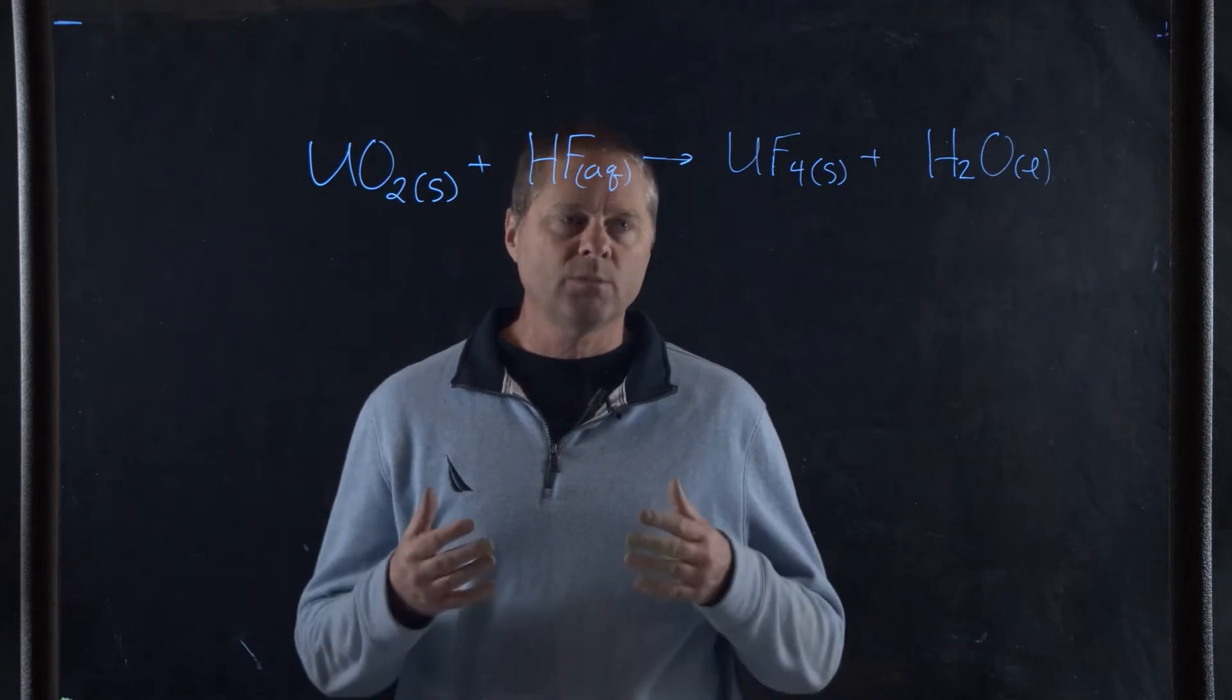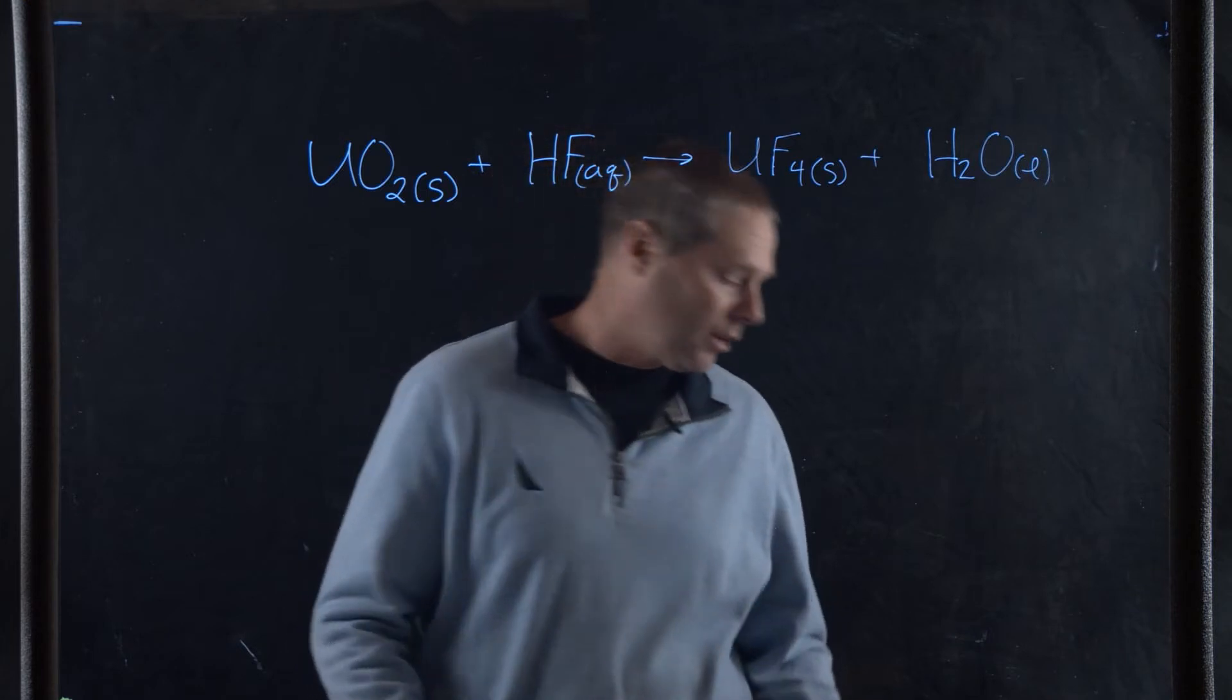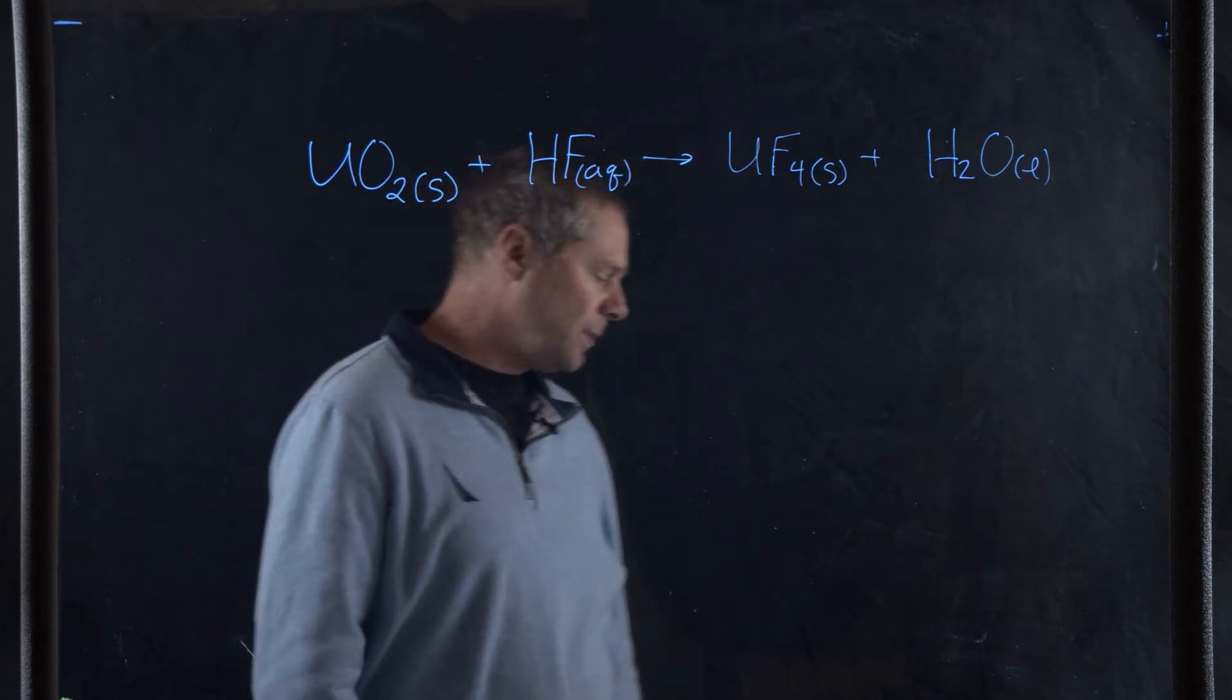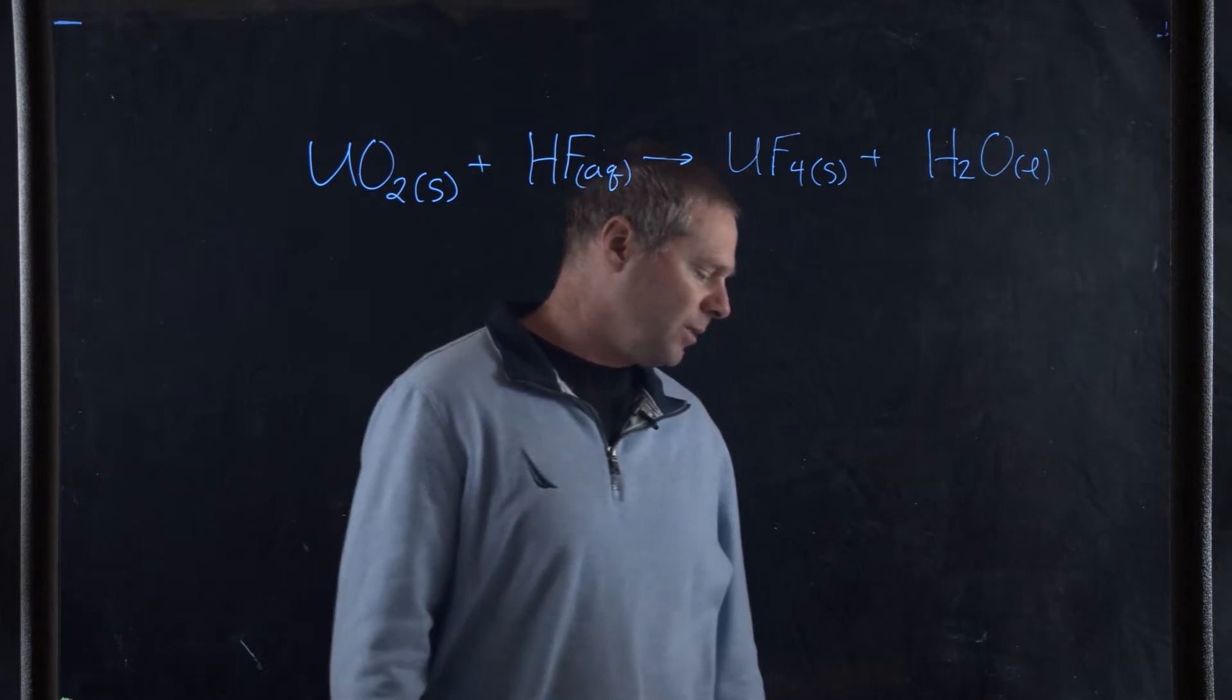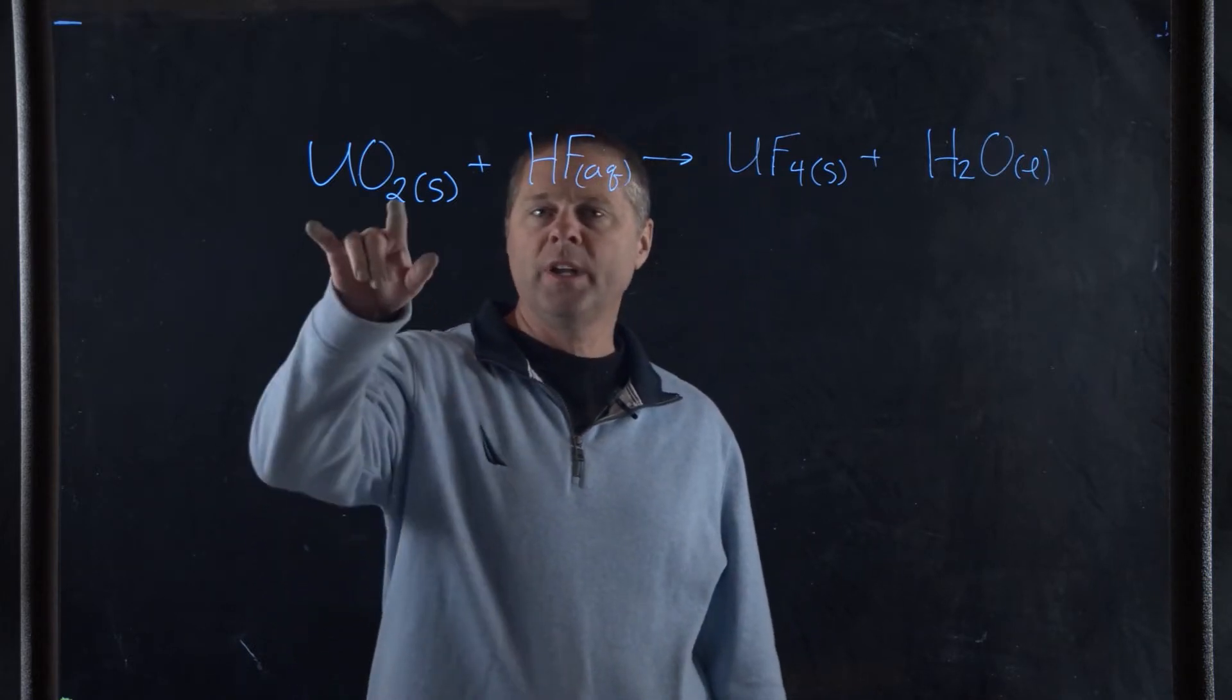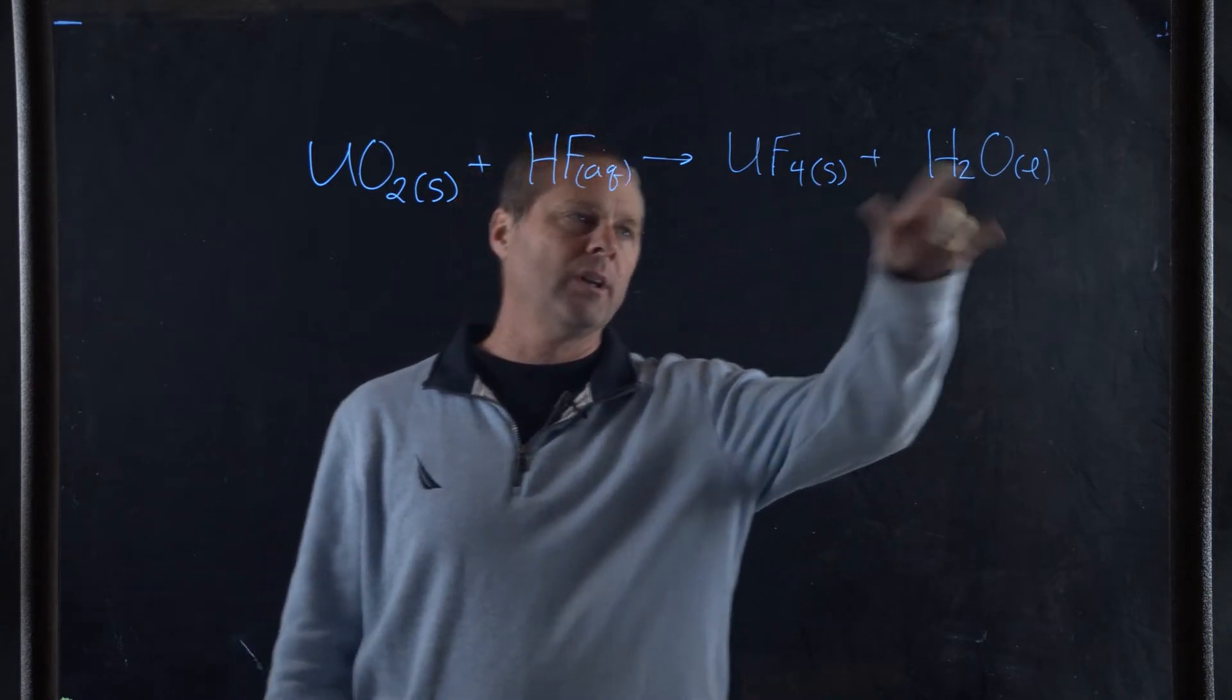In this problem we're going to do some stoichiometry. The question reads: one of the first steps in the enrichment of uranium for use in nuclear power plants involves a displacement reaction between uranium oxide and hydrofluoric acid to produce uranium fluoride and water.